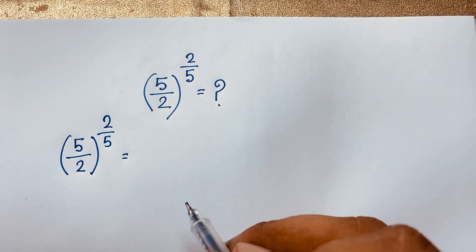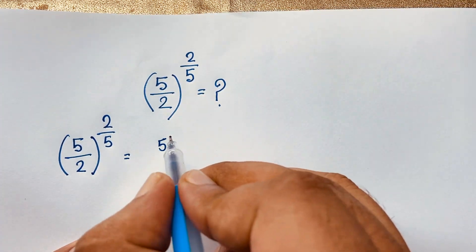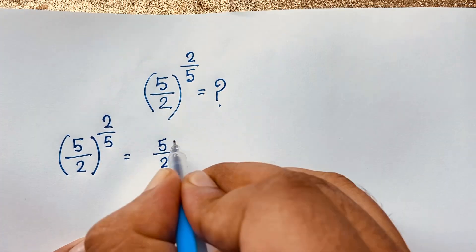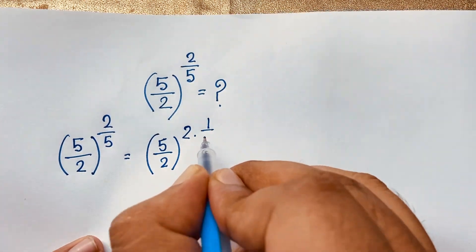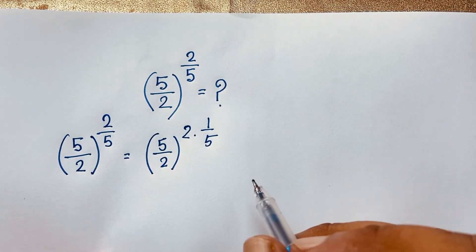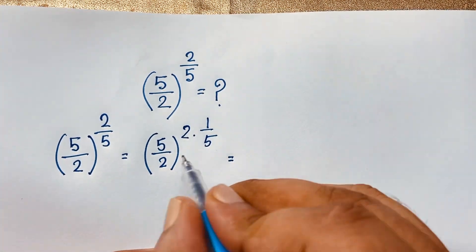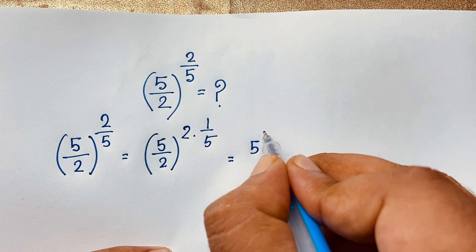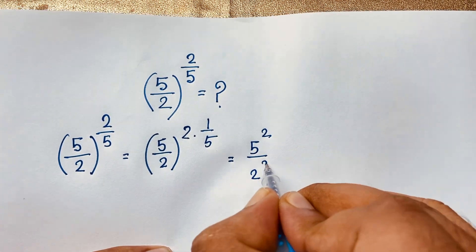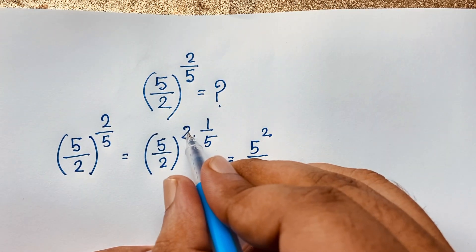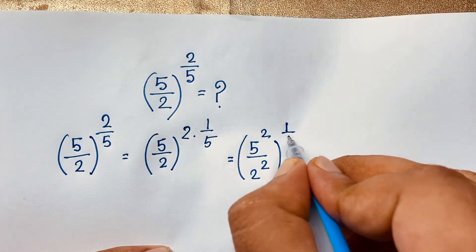Now, at this moment, you can see easily it will be 5 to the power of 2, with 5 over 2 in brackets, and the power is 2 times 1 over 5. So 2 times 1 over 5 gives 2 over 5. Then it will be 5 to the power of 2, over 2 to the power of 2, in brackets, with power 1 over 5.